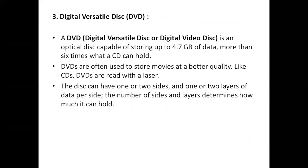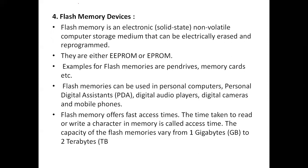The next one is DVD. The full form of DVD is digital versatile disk or digital video disk. It is used to store a large amount of data — normally we store movies for better quality. When we use CDs and DVDs we get better clarity, and they are read with a laser. The disk can have one or two sides and one or two layers of data per side. The next device is flash memory. Flash memory is an electronic non-volatile computer medium. These are either EEPROM or EPROM — electrically erasable or erasable programmable ROM. Examples include pen drives, memory cards, etc.